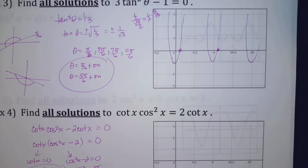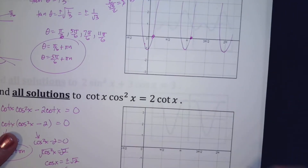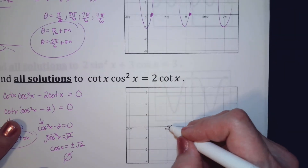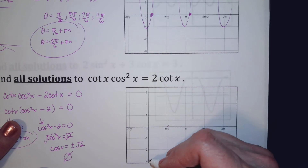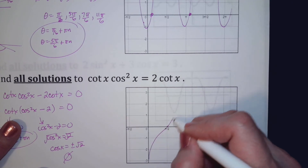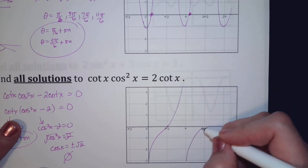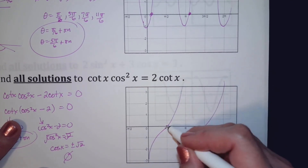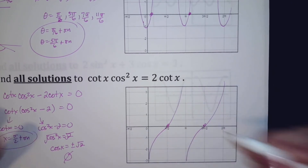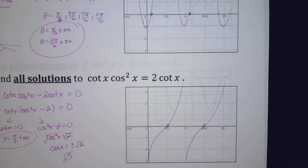My answer for this one is pi over 2 plus pi·n. If you graph that, you would see it looks like this, and the x-intercepts are the answers. Just like with algebra problems, the x-intercepts are your solutions.